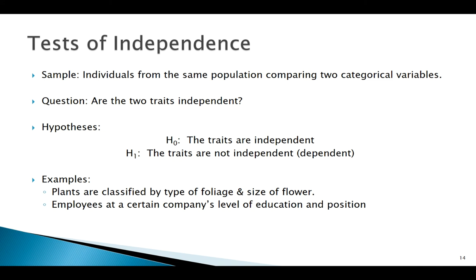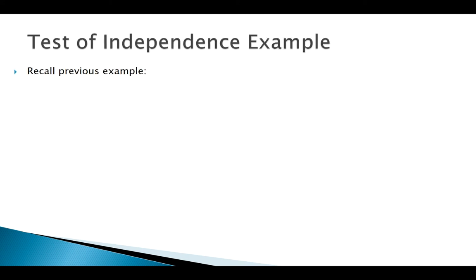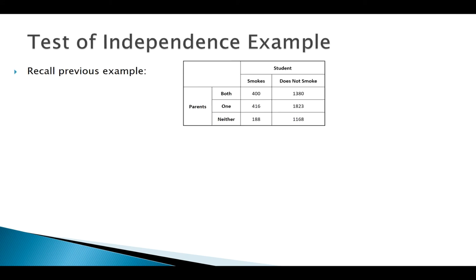Some examples: I had a sample of plants looking at their type and the size of their flower. Or say I had a roster of employees at a company and I wanted to look at their level of education to see if that dictated their position in the company. Again, individuals from the same population comparing two variables.